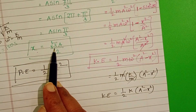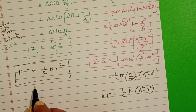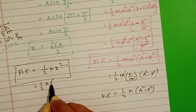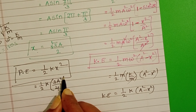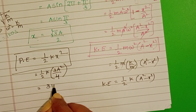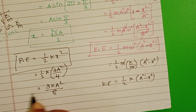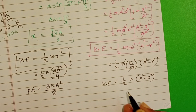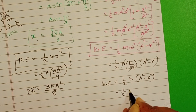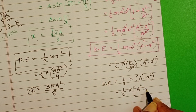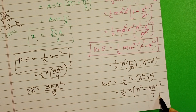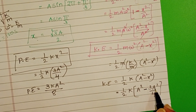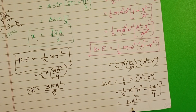We know x = √3A/2. Substituting into the potential energy: x² = 3A²/4, so PE = ½k·(3A²/4) = 3kA²/8. This is the potential energy. Now substituting x into the kinetic energy: KE = ½k(A² − 3A²/4). Taking LCM of 4: ½k·(4A² − 3A²)/4 = ½k·A²/4 = kA²/8.